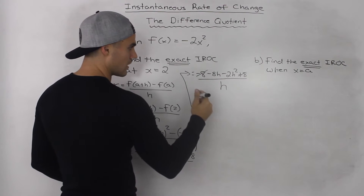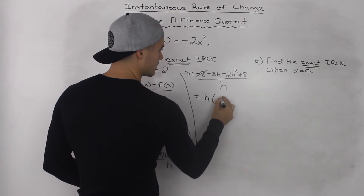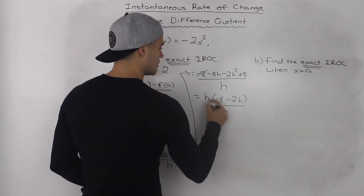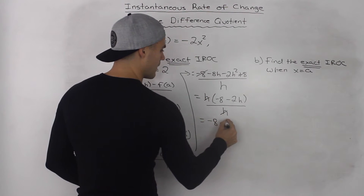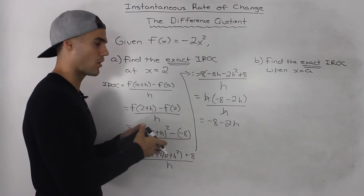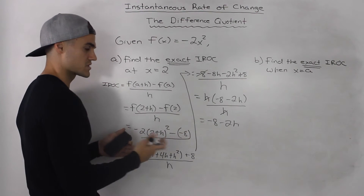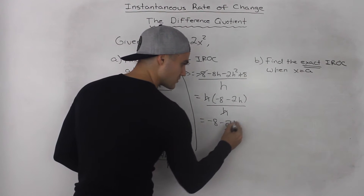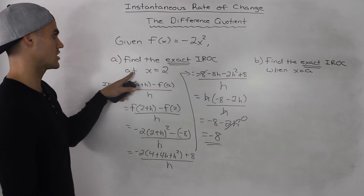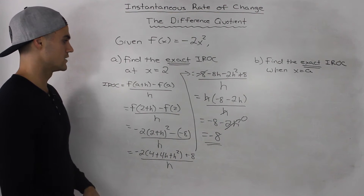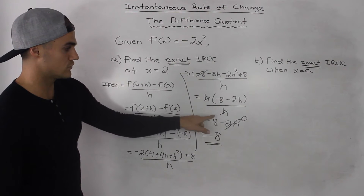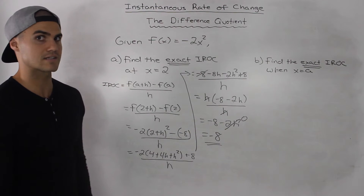Notice how we can factor out an h from the numerator, giving us h(-8 - 2h) all over h. The h's cancel out and we're left with -8 - 2h. To find the exact instantaneous rate of change, h must approach 0, so we plug in 0 for h and we're left with -8 as the exact instantaneous rate of change at x = 2.